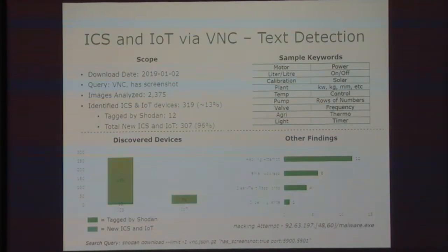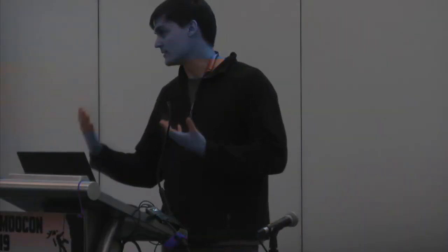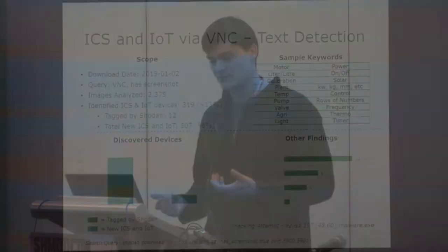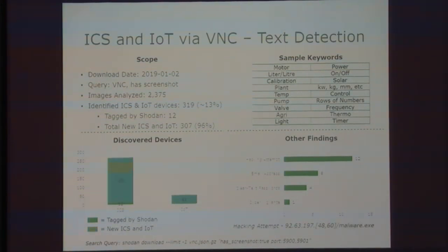Here's an experiment I did to keep within the API limits for both AWS and Shodan. The question was: how many industrial control systems and IoT devices are already out there? Shodan does a great job of tagging these based on banner grabs and open ports. But let's take it a step further. I took all unauthenticated VNC instances that had an image on Shodan — grabbed those and fed keywords like 'motor' and 'power' through the recognition service. We analyzed just over 2,300 images and found an additional 319 devices — over 10% of that population. Shodan had tagged 12 of those, but using this methodology we found an additional 307 that Shodan hadn't found.